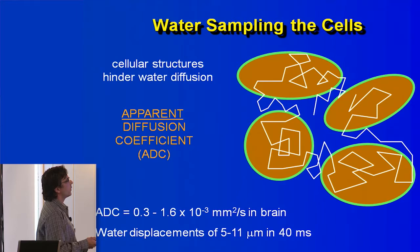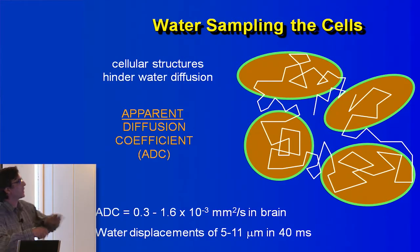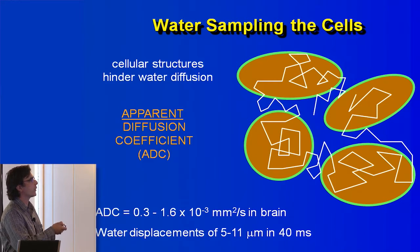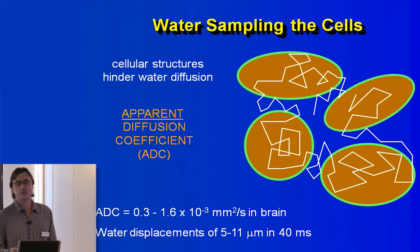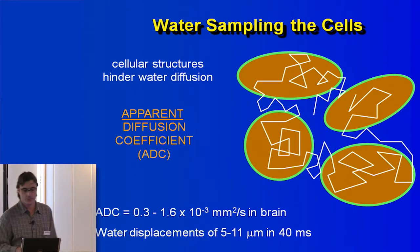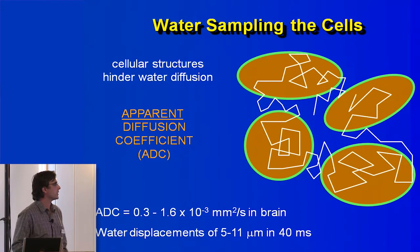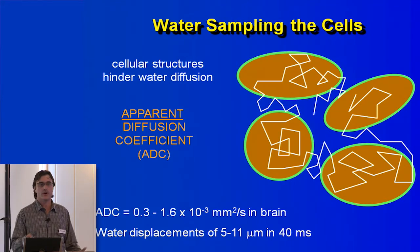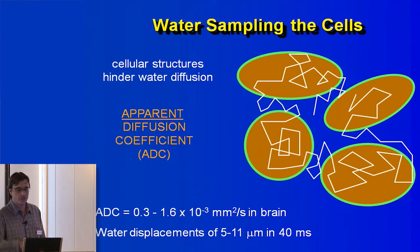What's interesting about diffusion is that it samples the cellular microstructure. The water molecules are moving around, bumping into cell membranes, in both intracellular and extracellular space. We're inferring the microstructure from what the water is doing — how far it's moving and in what direction. That's why the diffusion coefficient is called the apparent diffusion coefficient, or ADC. Values range from about 0.3 to 1.6 × 10⁻³ mm²/s, and we get water displacements of about 5 to 11 microns in the brain in about 40 milliseconds. So although we have very coarse resolution, we're actually measuring things at the micron scale.